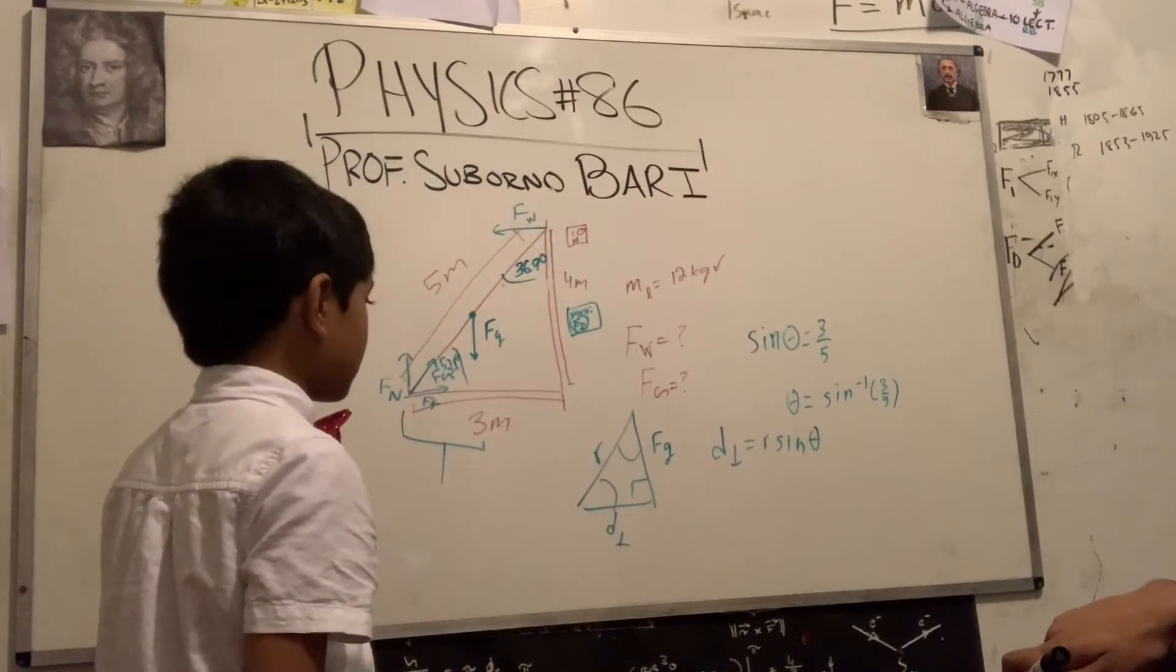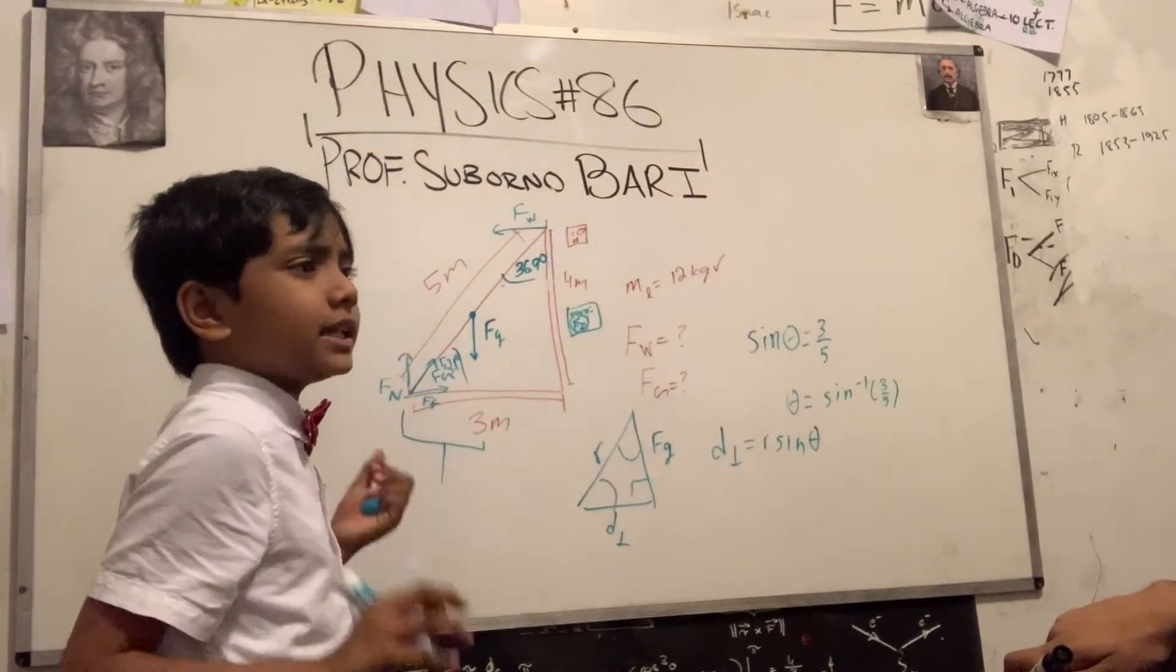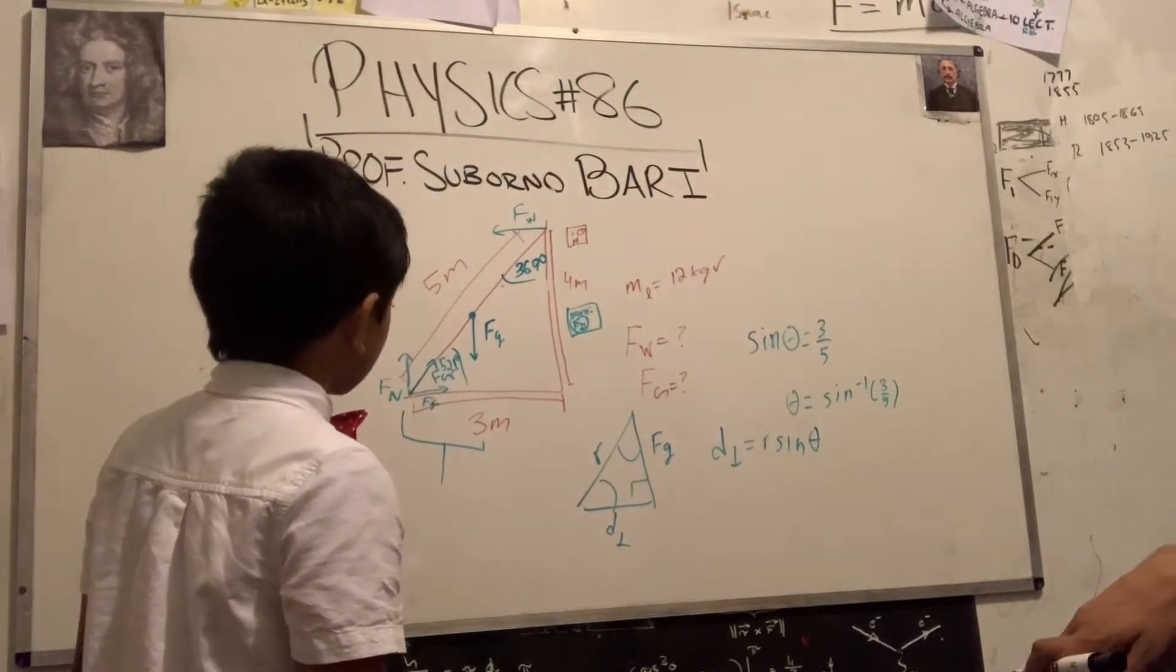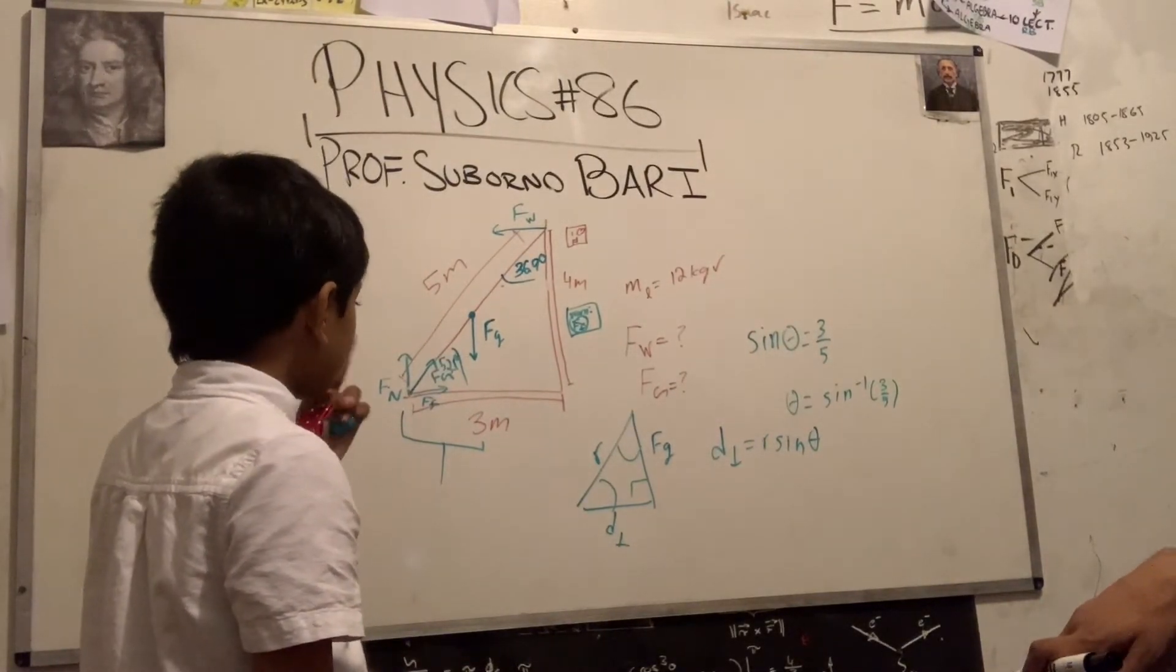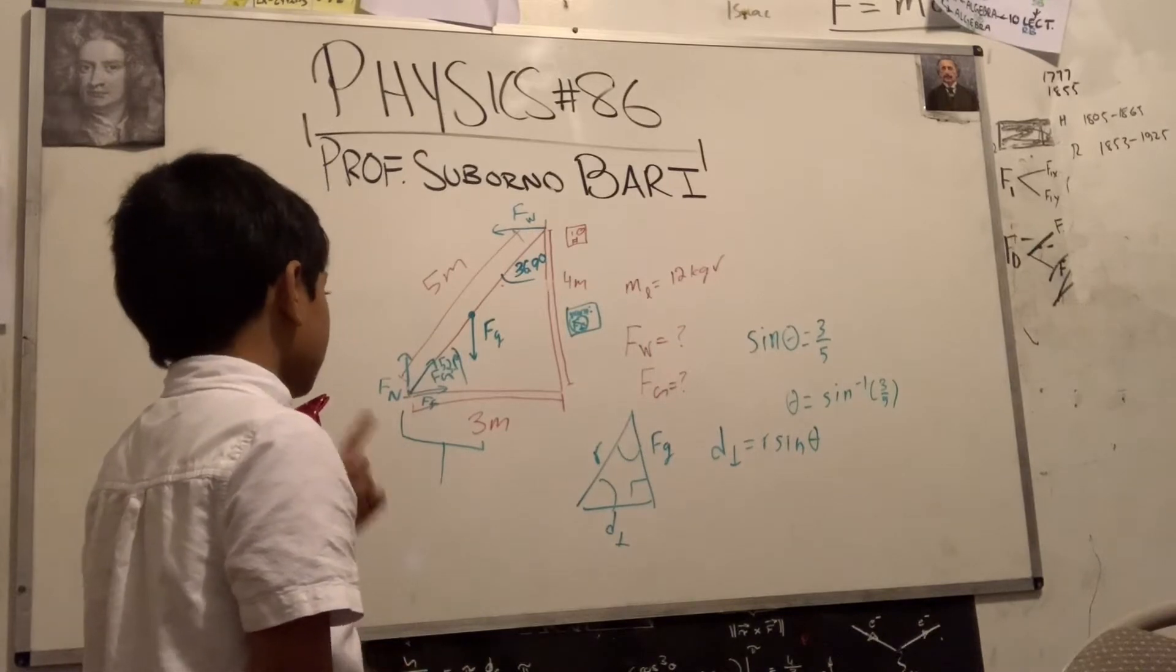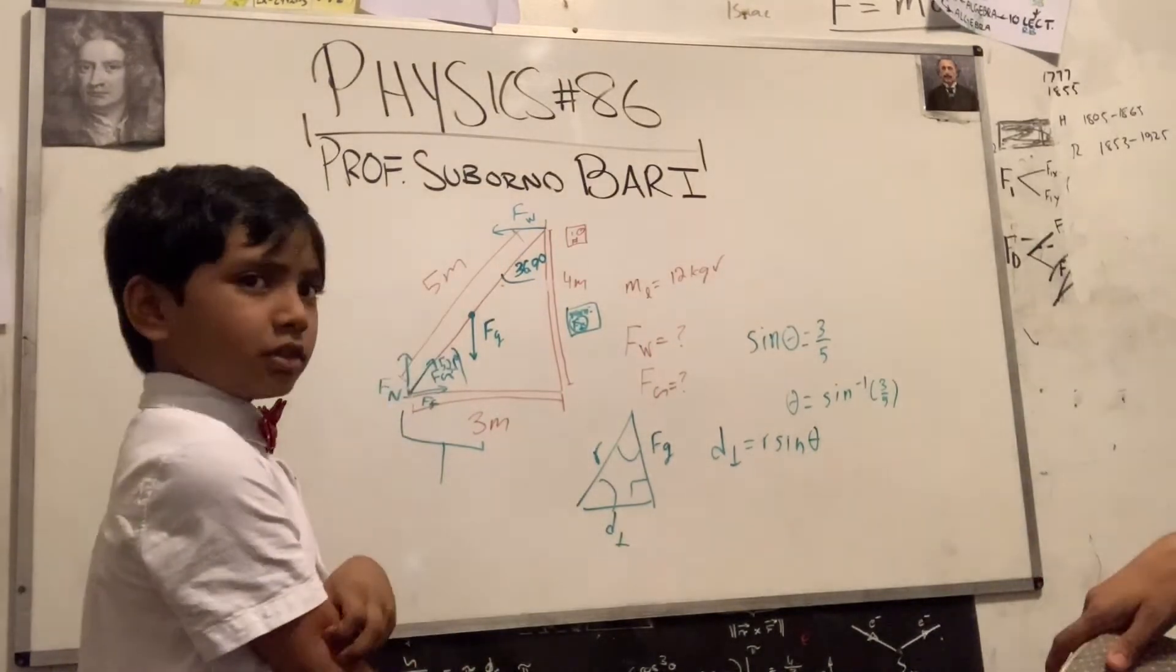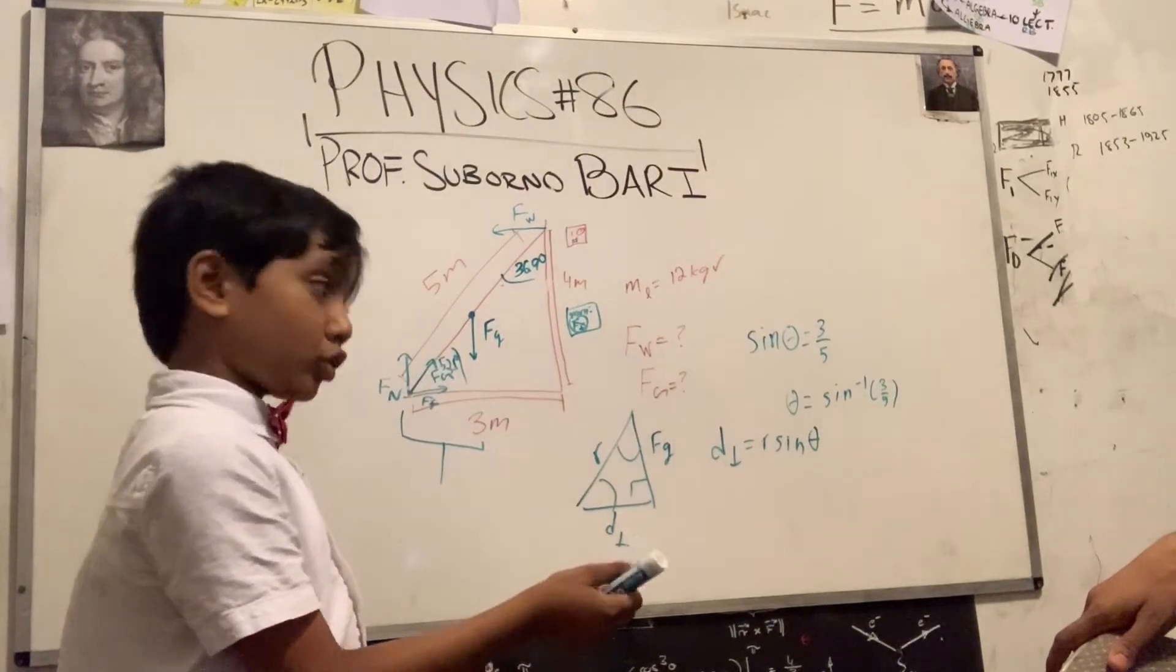What does d represent? D is for distance, you Dumbo. D is the perpendicular distance between FG... Oh, you're decomposing FG. But what's your center of rotation? What are you using as your axis? Where FG is acting, so we don't have to deal with FG in our torque equation.